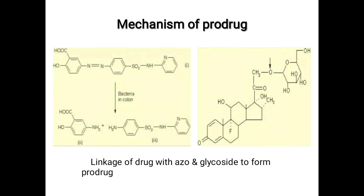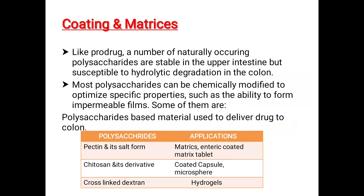Mechanism of prodrug. A prodrug is a medication or compound that, after administration, is metabolized into a pharmacologically active drug. Instead of administering a drug directly, a corresponding prodrug can be used to improve how the drug is absorbed, distributed, metabolized, and excreted. Prodrugs are often designed to improve bioavailability when a drug itself is poorly absorbed from the gastrointestinal tract. A prodrug may also be used to improve how selectively the drug interacts with cells or processes, reducing adverse or unintended effects, which is specially important in treatments like chemotherapy. Here is the linkage of drug with azo and glycoside bonds to form prodrug.